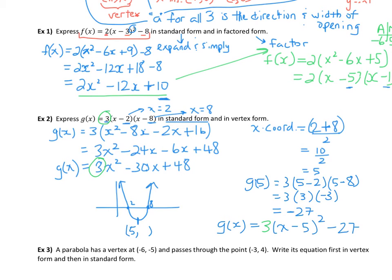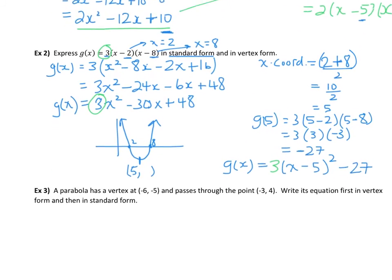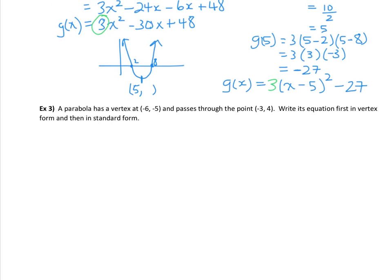All right, so now we're ready for the next example. A parabola has the vertex at negative 6, negative 5, and it passes through this point. Write its equation first in vertex form, and then in standard form.